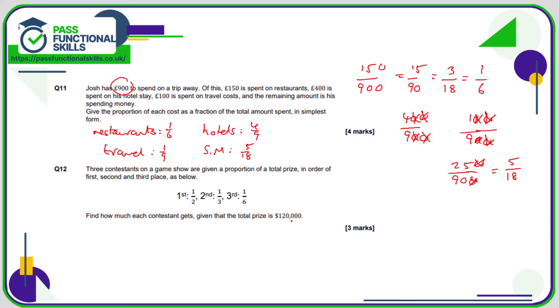First gets half, so half of 120,000. That's 120,000 divided by two. I don't think you need a calculator for this. 120 divided by two is 60, so that's going to be 60,000.